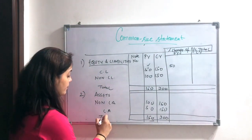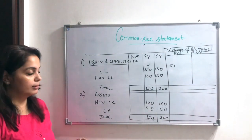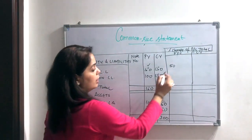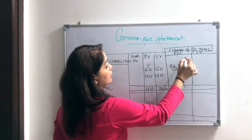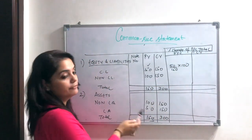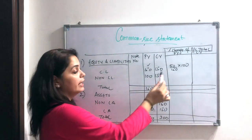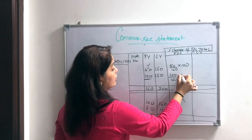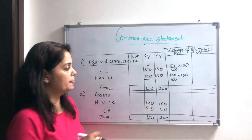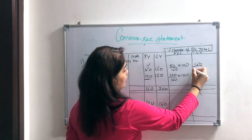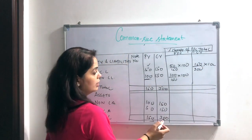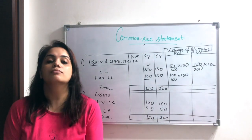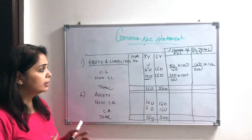The balance sheet must be clear and equal on both sides. In the previous year, current liabilities percentage is 50 divided by 150 into 100. The total balance sheet for the previous year is 150. For non-current liabilities: 100 divided by 150 into 100. For the current year, 150 divided by 300 into 100 — same formula. The percentage is removed in terms of the total balance sheet. It is very simple.